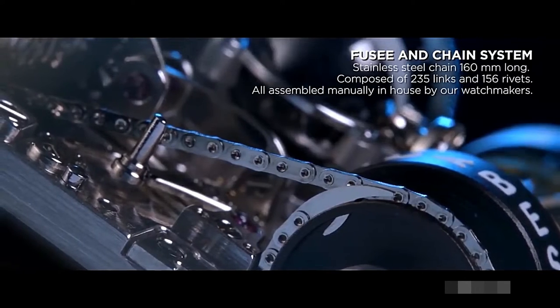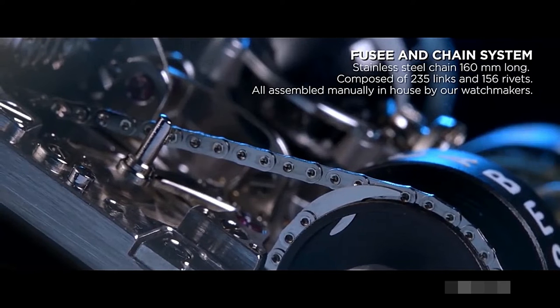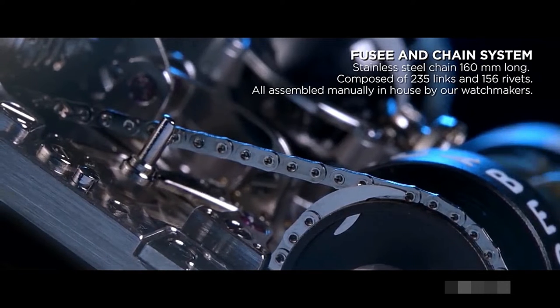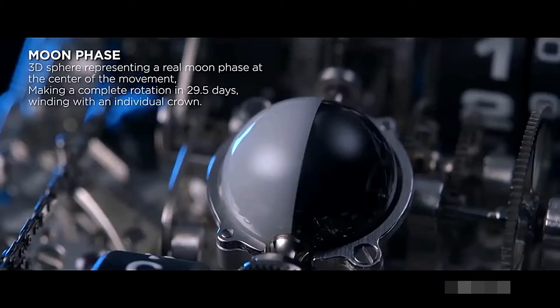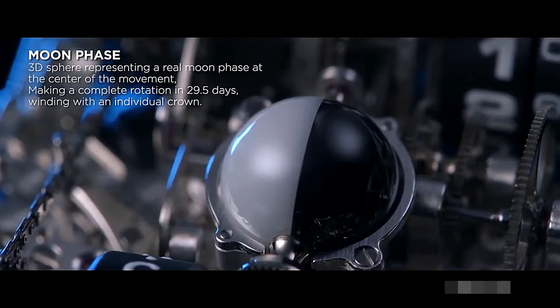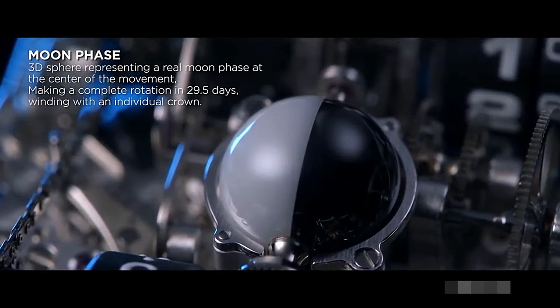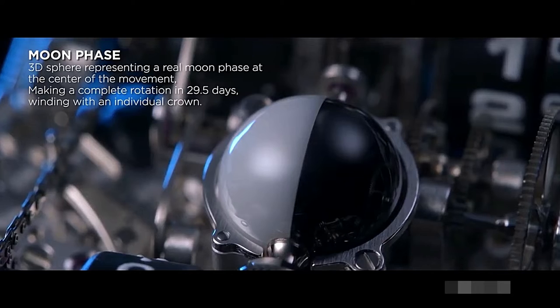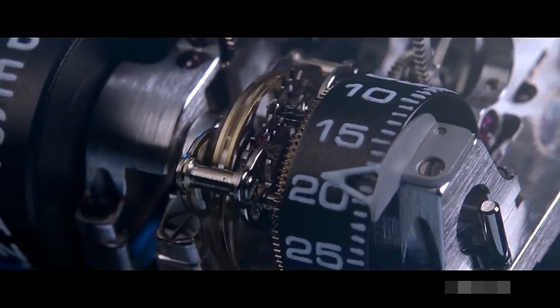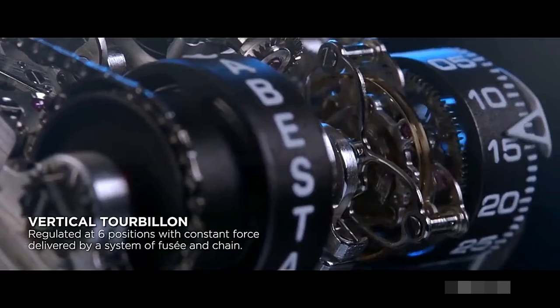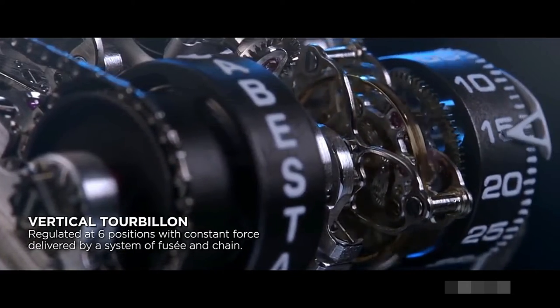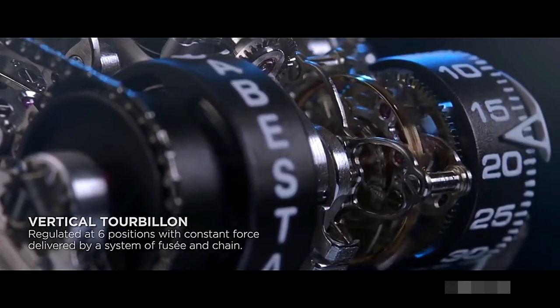The chain and link system is comprised of 160 millimeters of stainless steel chain, with 235 links and 156 rivets. At the heart of the watch is the spherical moon that makes a complete rotation every 29.5 days, and is wound by an individual crown. Aside from the spectacular moon phase indicator, thanks to the chain and fusee system, the Lunanera also boasts a vertical tourbillon regulated at six positions.